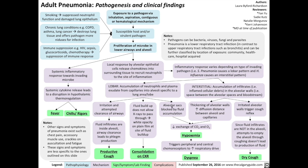With lobar pneumonia — a trait shared with interstitial pneumonia — the alveolar sacs can be blocked by fluid accumulation, which reduces the exchange of gases like carbon dioxide and oxygen. Less oxygen absorbed means hypoxemia, or low levels of oxygen in the bloodstream. Similarly, less CO2 excreted leads to hypercarbia, or an increase of CO2 in the bloodstream. These changes in gas concentrations trigger peripheral and central chemoreceptors to increase the respiratory drive, which leads to a sensation of shortness of breath, otherwise known as dyspnea.